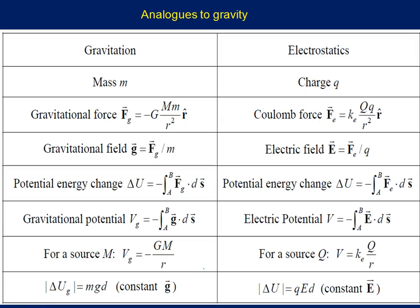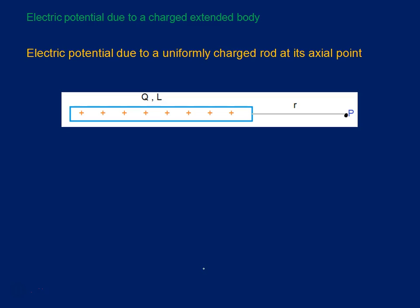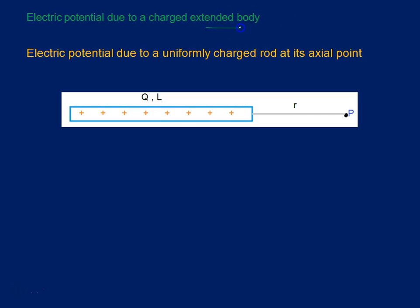Analogues of gravity — every day I am telling you this chapter is exactly the same as what we discussed in class 11 with gravity. Now, for an extended body with continuous charge distribution, I hope everybody is clear: if it is an extended body, we take the small elemental part, calculate the potential, then generalize it.